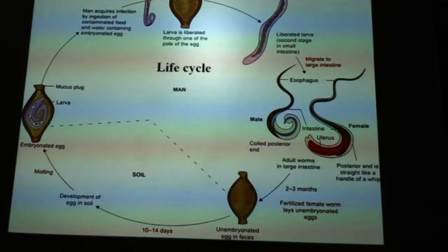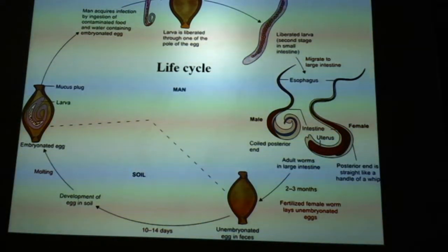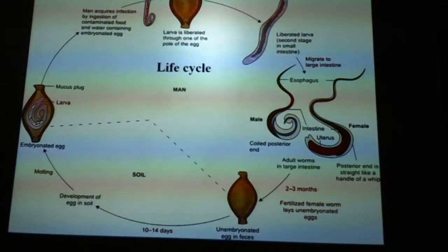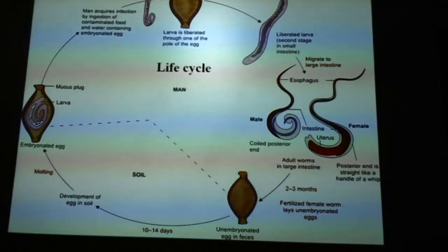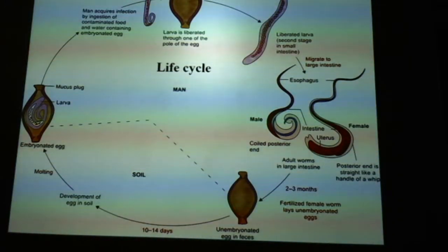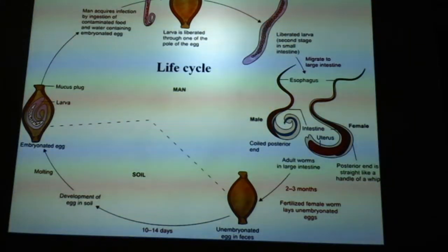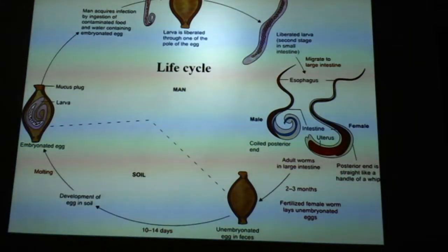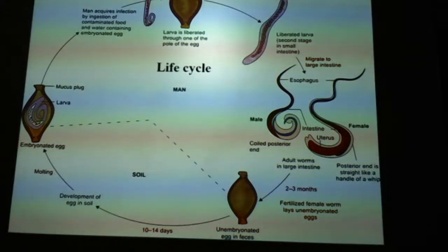Moltings mean there will be morphological changes in the egg. Then it gets transformed into an embryonated egg — the mucus plug and other features will be restored. This embryonated egg will be contaminated with food or water we intake, and this is how the cycle repeats.